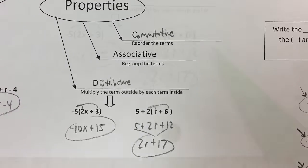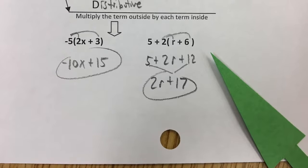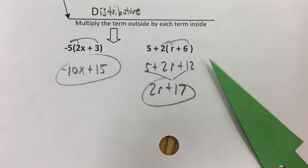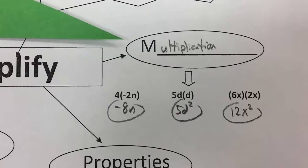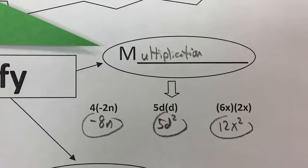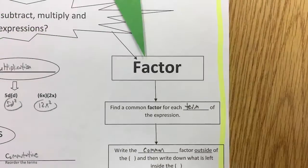Look for any properties. If you have addition, you can use commutative and associative. And then sometimes you can use distributive if it looks like that. And then sometimes there's just multiplication to be done in order to simplify an algebraic expression.